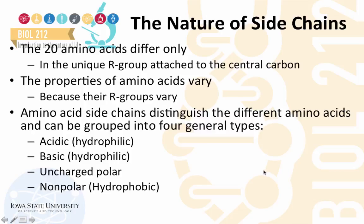The 20 different amino acids that make up proteins vary only in the unique R group attached to the central carbon, which confers different properties on the amino acids. The amino acid side chains distinguish one amino acid from another and can be grouped into four general categories: acidic, basic, uncharged polar, or non-polar. Acidic and basic side chains tend to be hydrophilic, whereas the non-polar side chains tend to be hydrophobic.